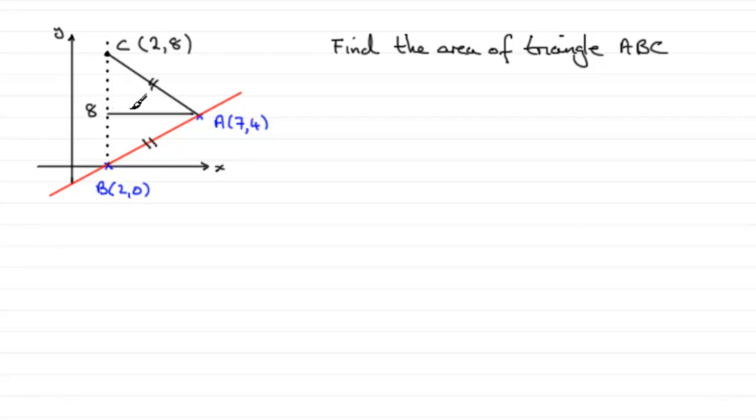And we know that the height of the triangle, this distance here, would be the difference between the 7 and the 2, 5 units.